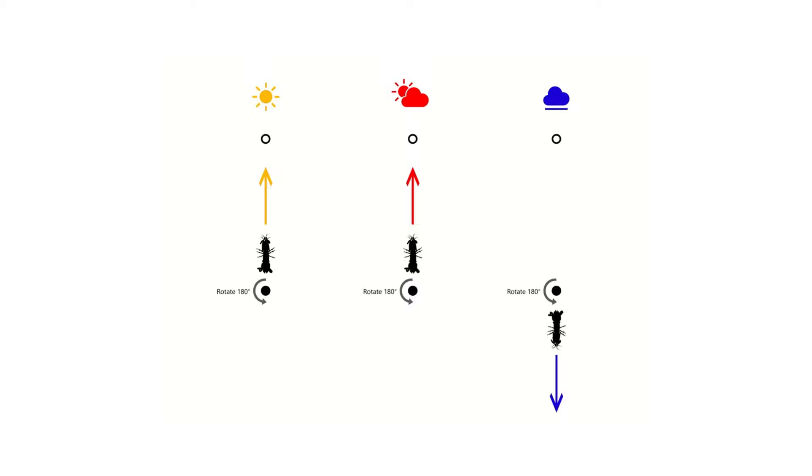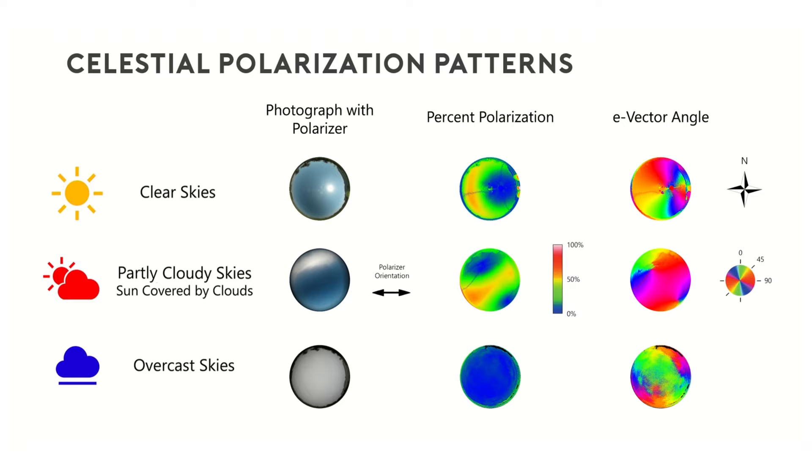Since mantis shrimp were able to orient correctly home under skies in which the sun was blocked by clouds but patches of blue sky were still visible, they appeared to use celestial information other than the sun for orientation.